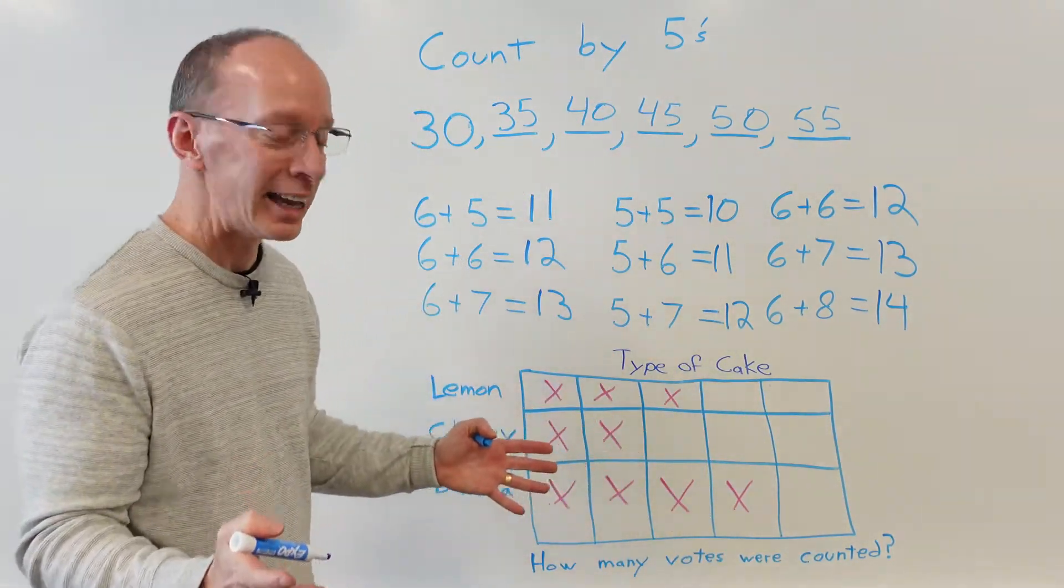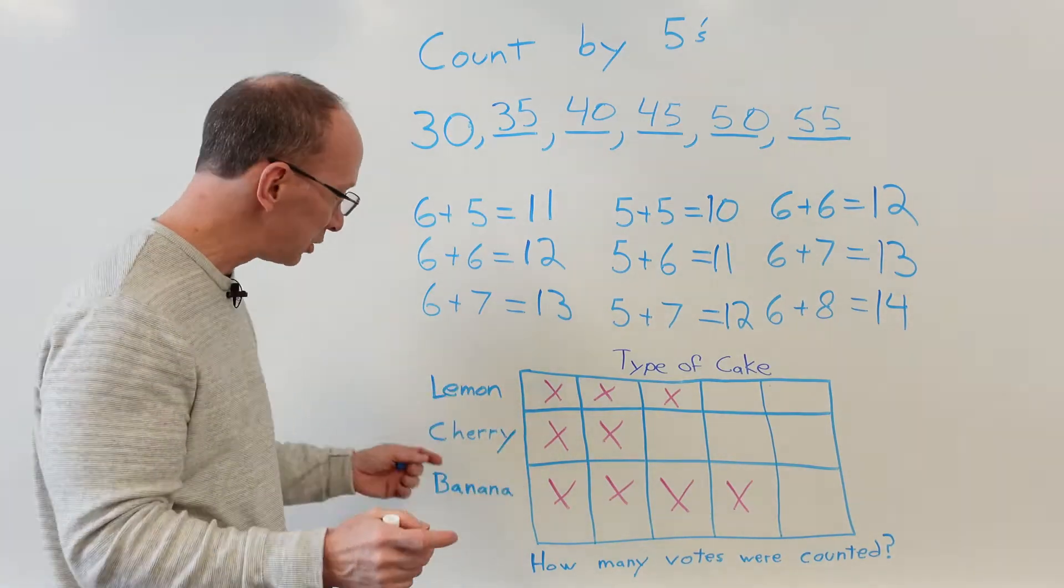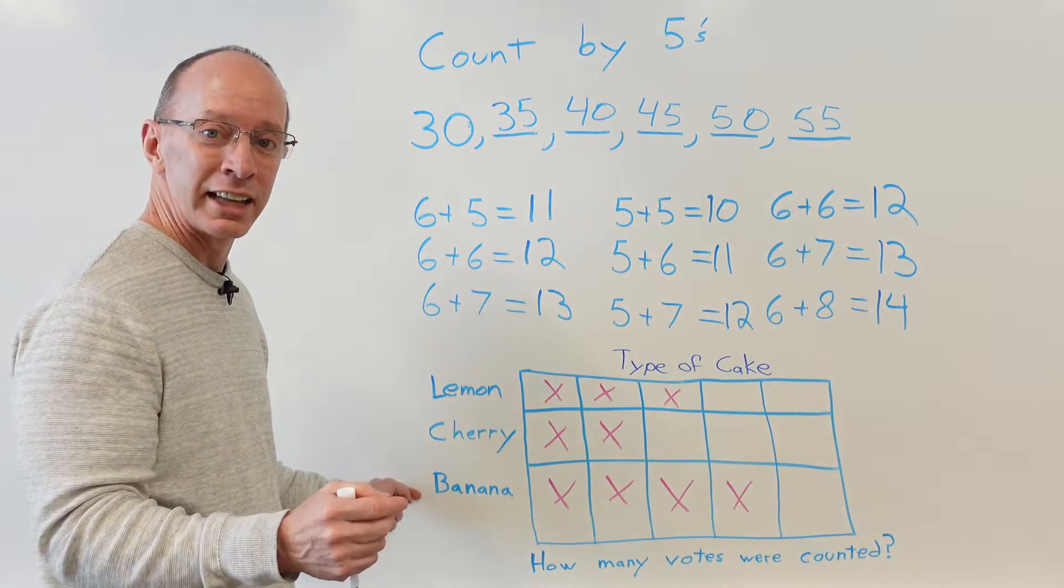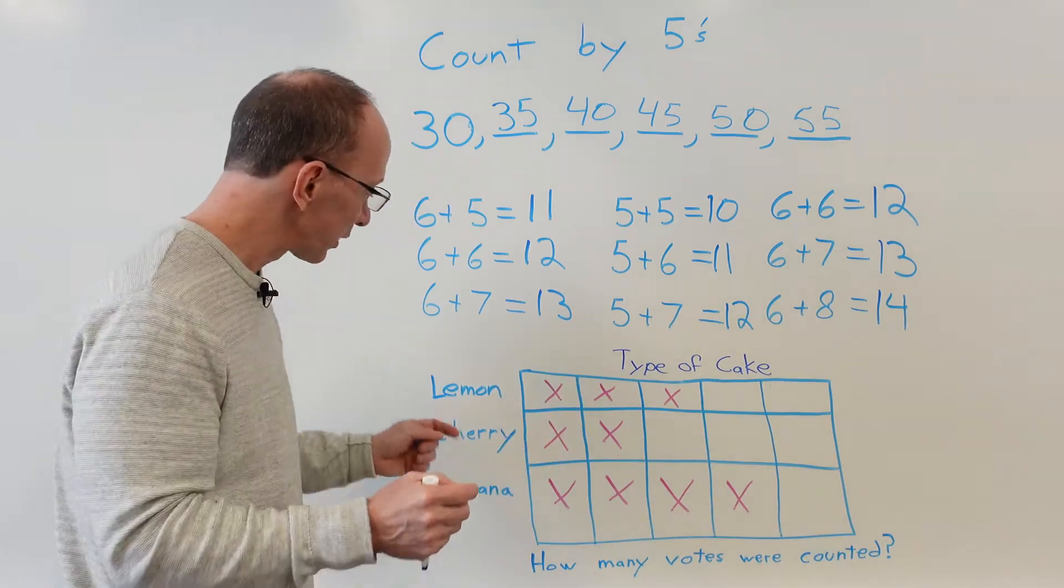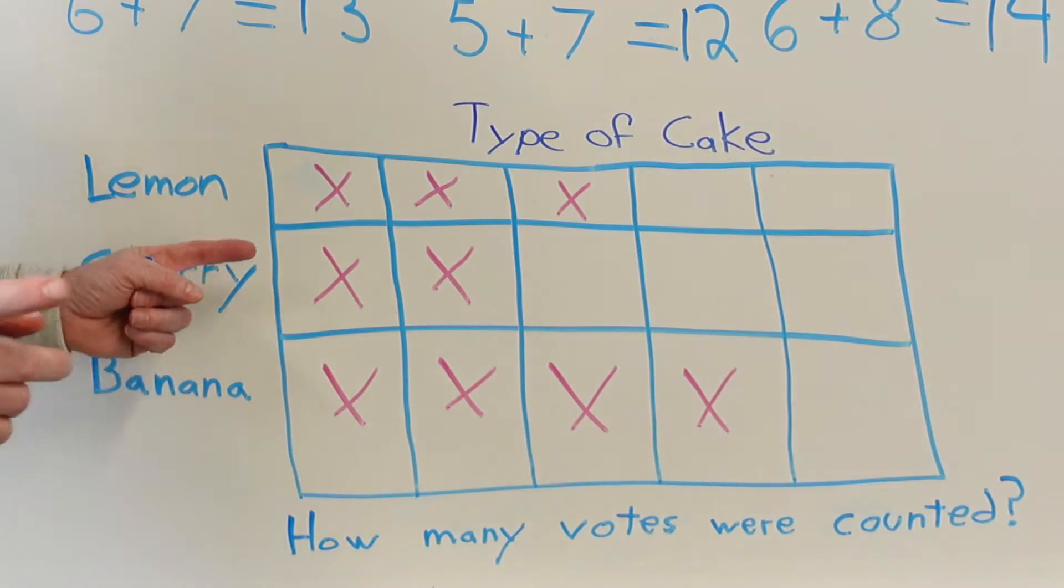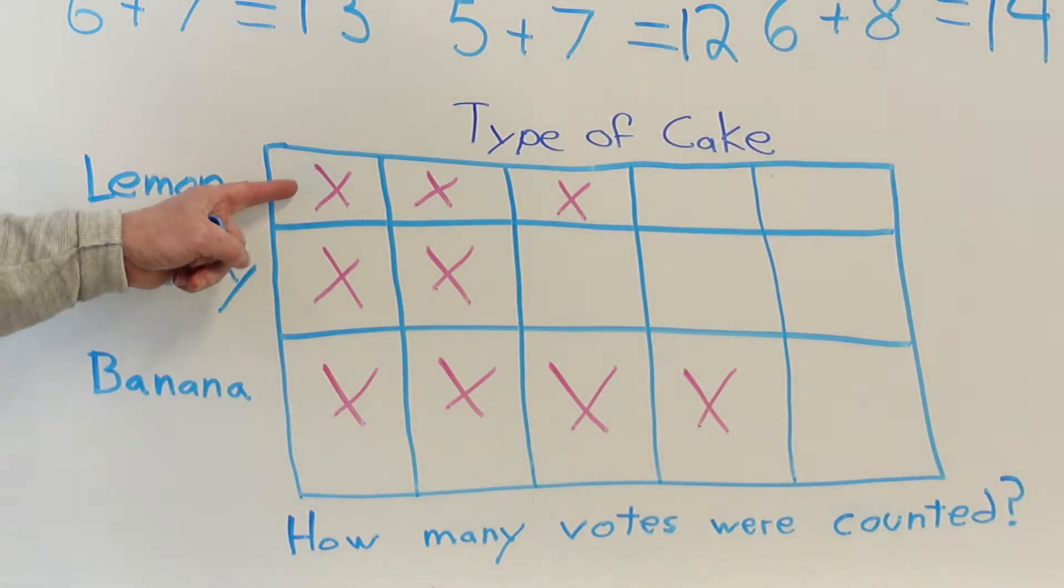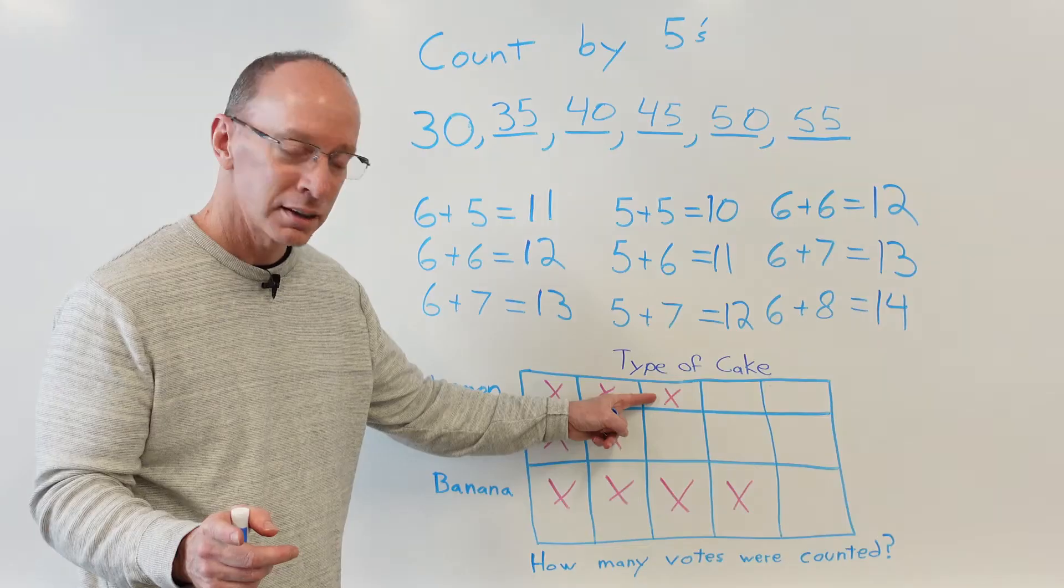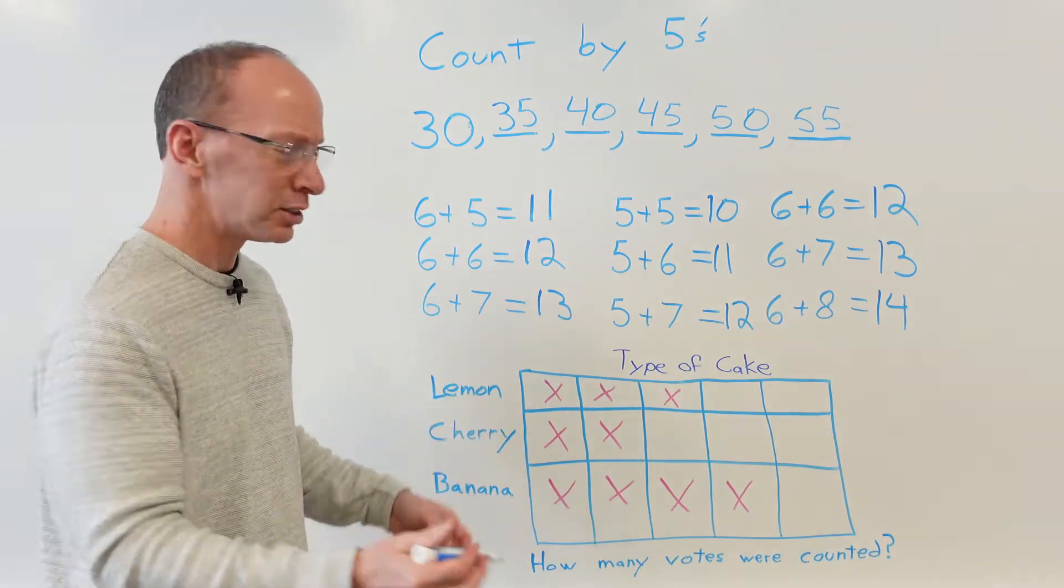All right, let's get to my favorite part here and we're talking about types of cake. We have our choices between three different cakes that they voted on - we have the lemon cake, the cherry cake, and the banana cake. So how many votes did we get for the lemon cake? We got one, two, three. All right, we got three votes, and if you want to you can always put that three right here.